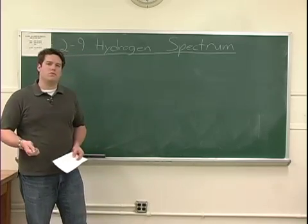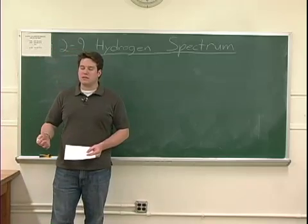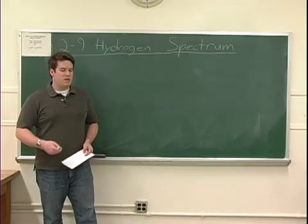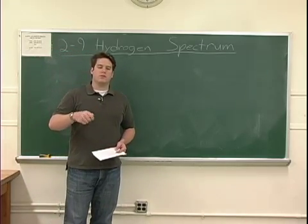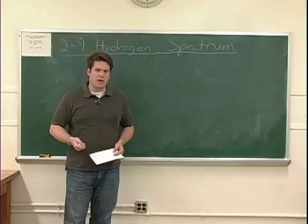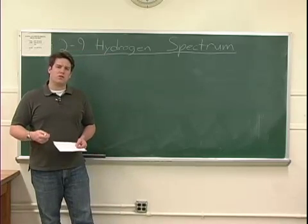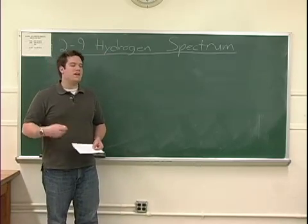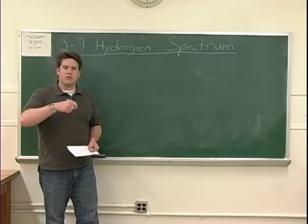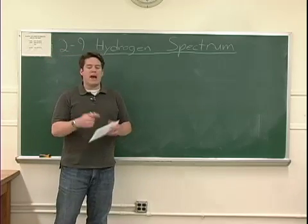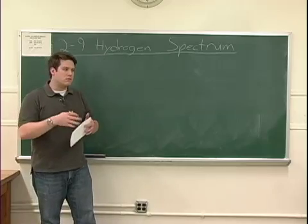But you know, according to classical physics and classical electromagnetism, that since that electron is circling the atom, constantly accelerating, according to this model it should also be losing energy. As the electron loses energy, it spirals into the center of the atom. Now the atom becomes neutral and disintegrates.